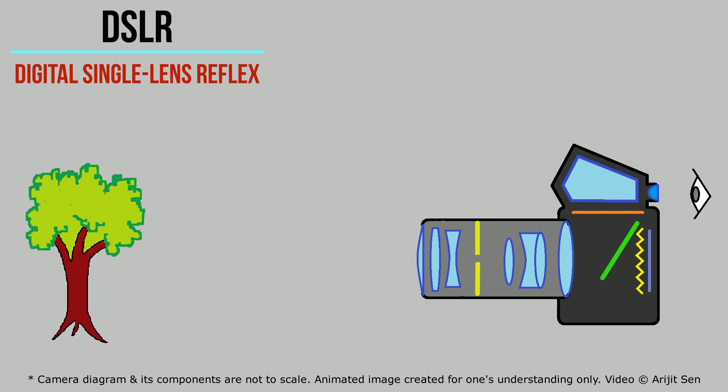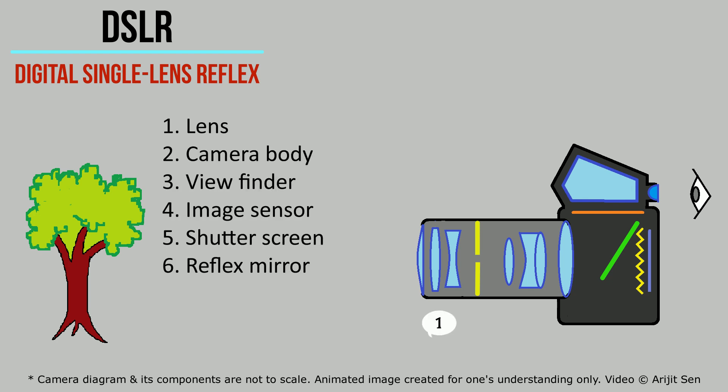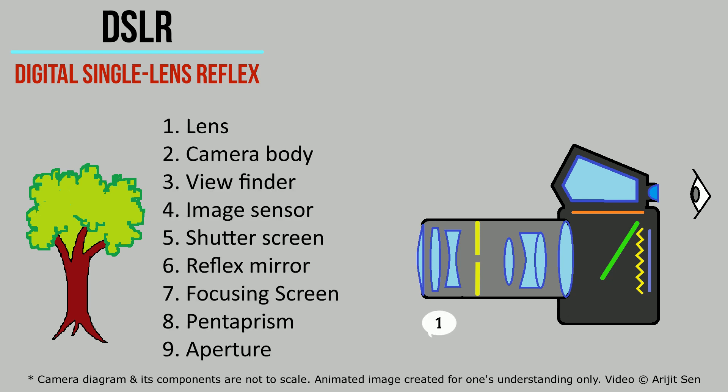DSLR — Digital Single Lens Reflex camera — that is the full form. I will explain why it is termed as such at the end of this video. Before going into the working principle of a DSLR, let us first get acquainted with the various parts of a DSLR camera in brief.